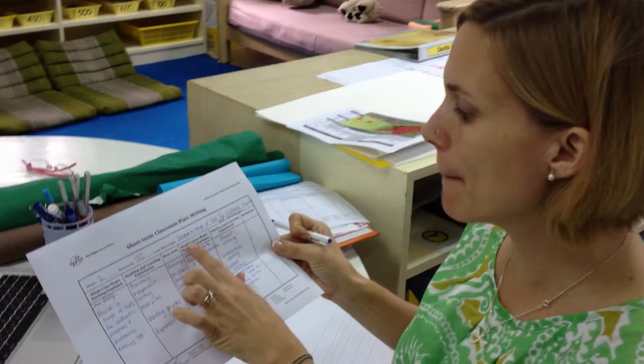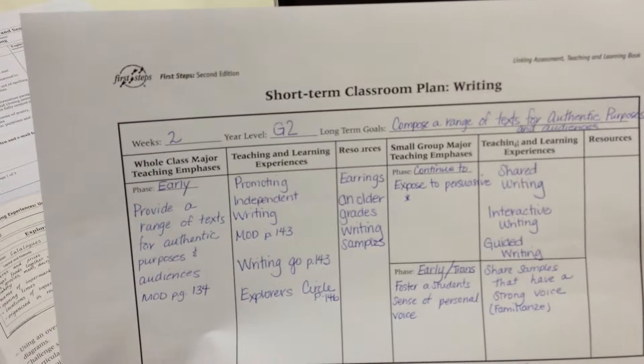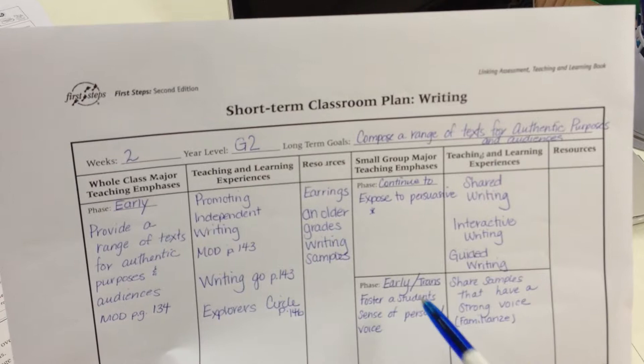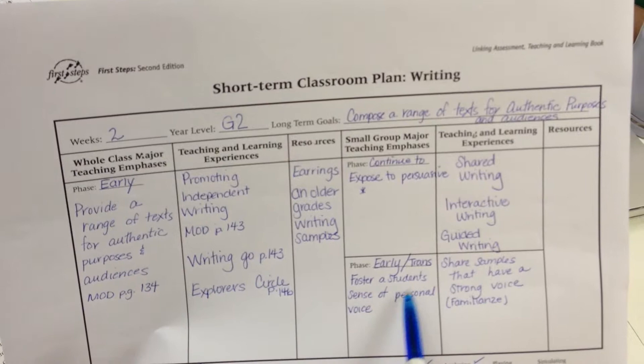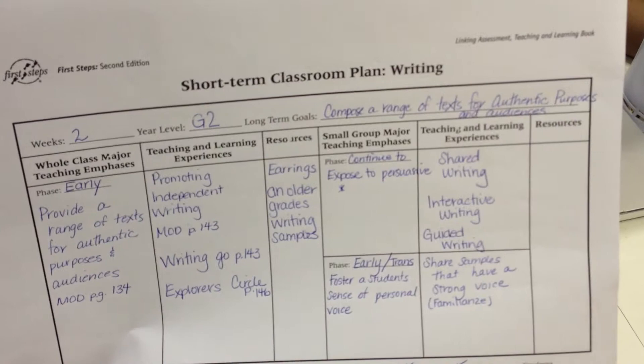The next step would be to look for some small group major teaching emphasis. I need to continue exposing my earlier writers to persuasive writing — we'd do a bit more shared writing, then interactive writing and guided writing in the group. For those early students that I want to move into the transitional phase, I'm going to hope to foster a student's sense of personal voice. One of the teaching and learning experiences I want to provide is sharing samples from other students that have a strong voice. And that is how we can start planning with First Steps. Thanks.